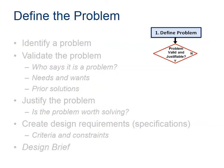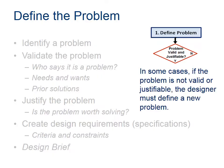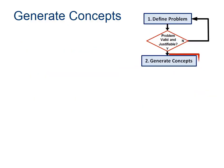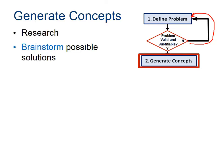Once we've defined the problem and written our design brief, we have to ask: is the problem valid? Is it justifiable? If it's not, then we don't really have a solvable problem and we'll have to go back and redefine it. But if we do, let's look at how we generate some concepts. This is one of my favorite parts because we get to do some research. Brainstorming is the most fun thing — we'd get together in a big group and there's no such thing as a stupid idea. It's all about generating the quantity of ideas, not the quality of ideas.